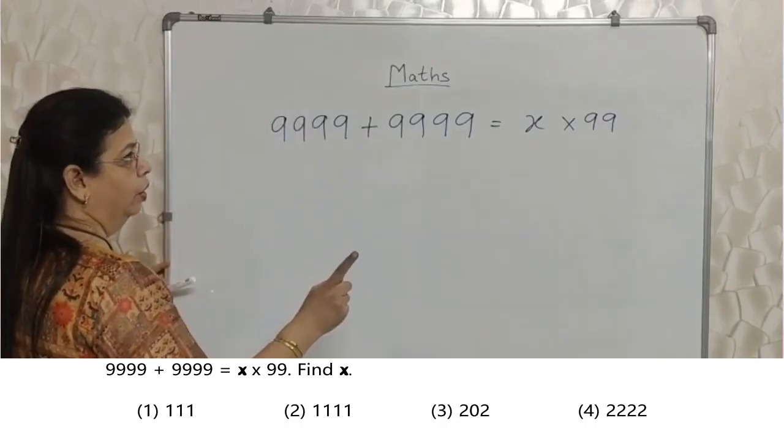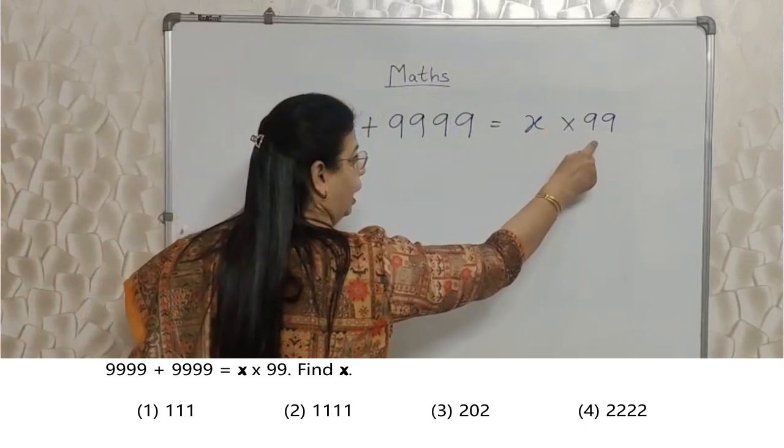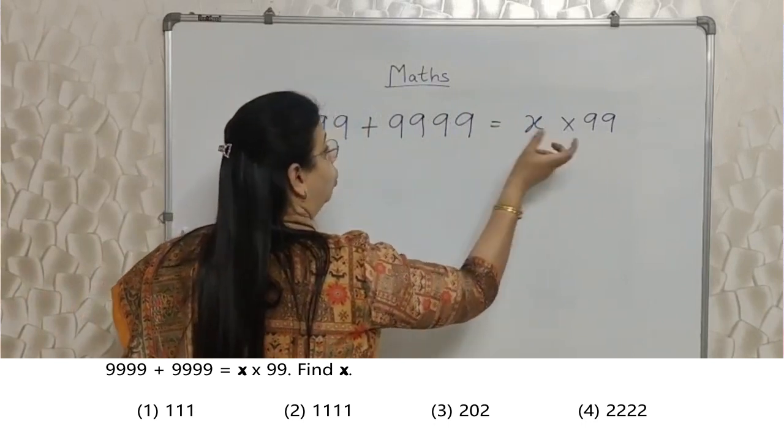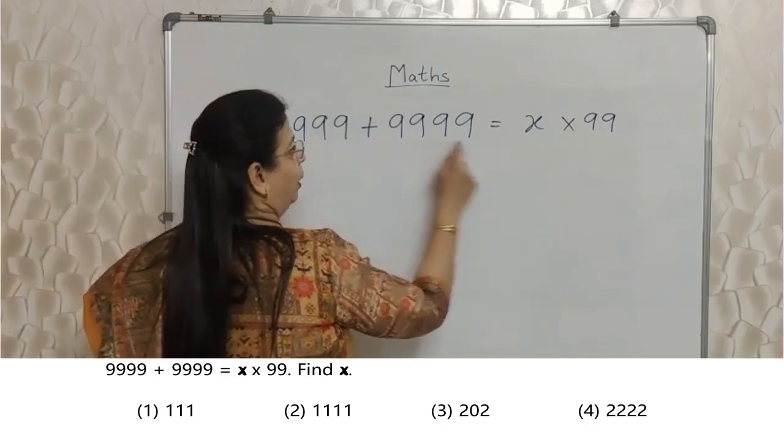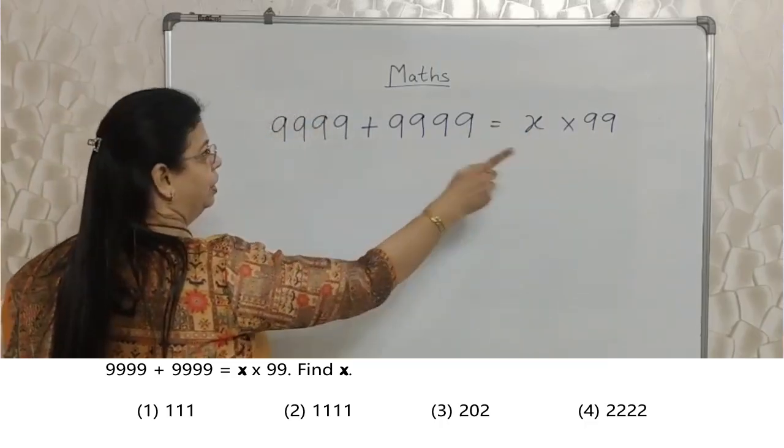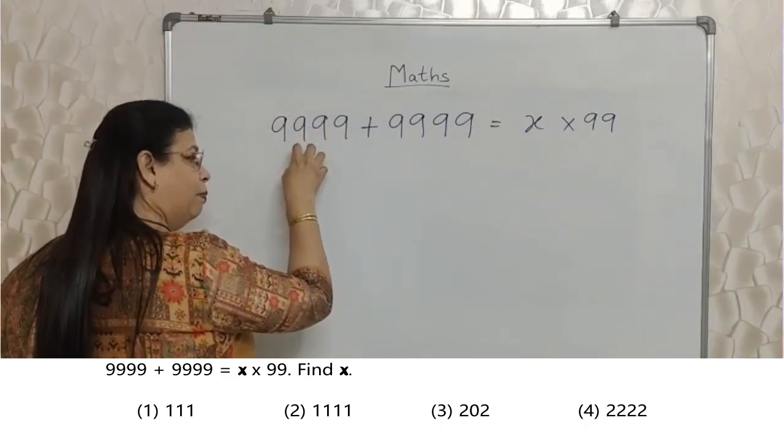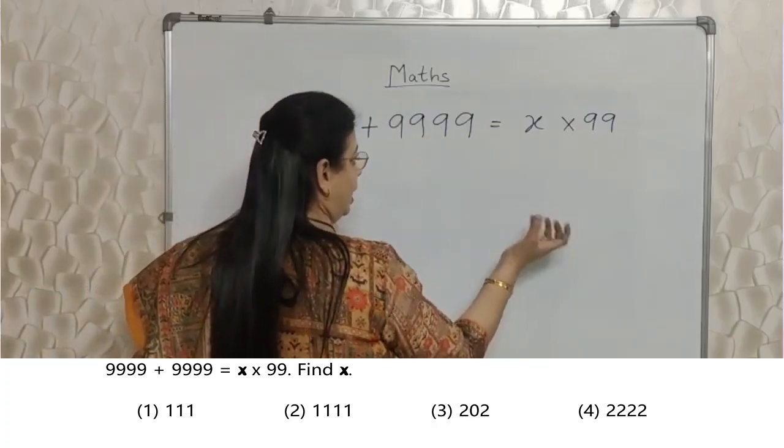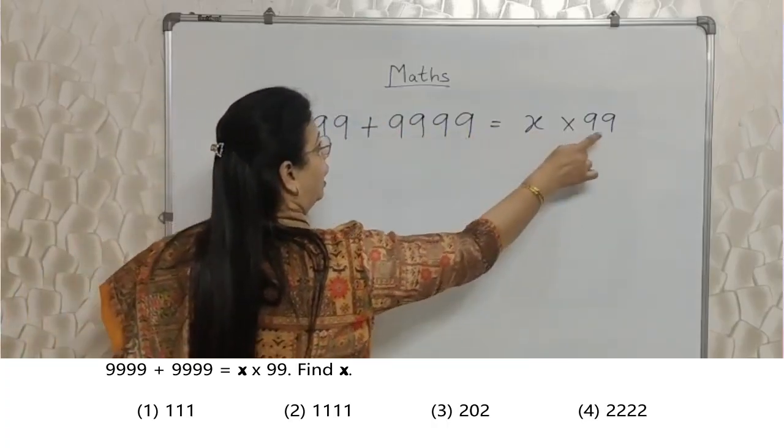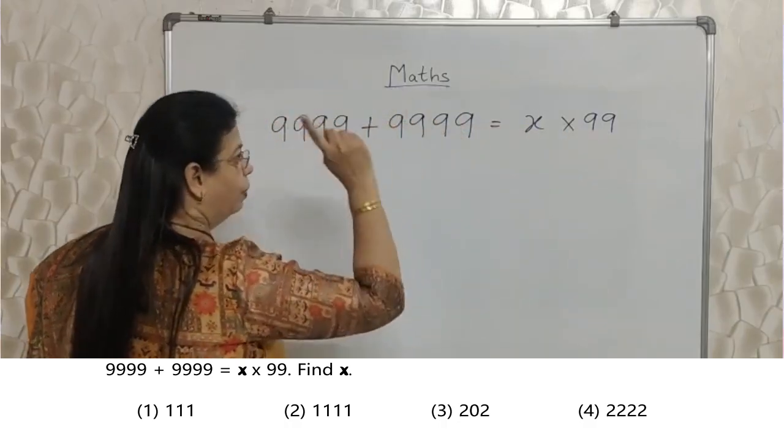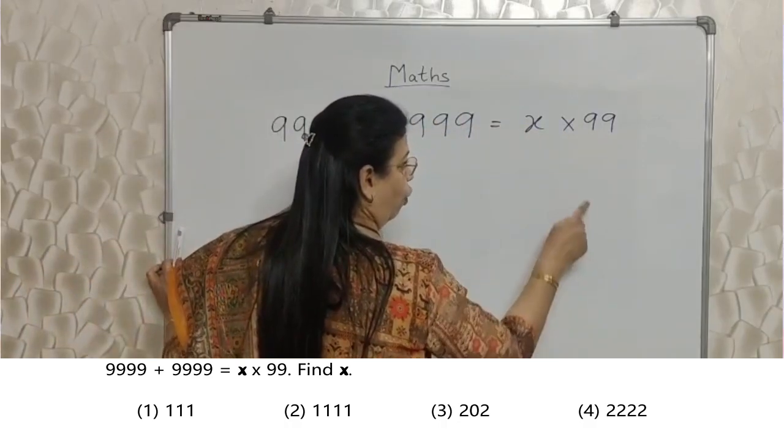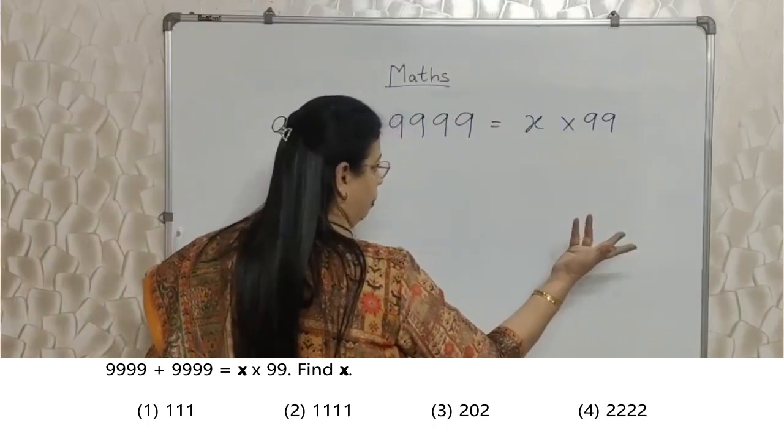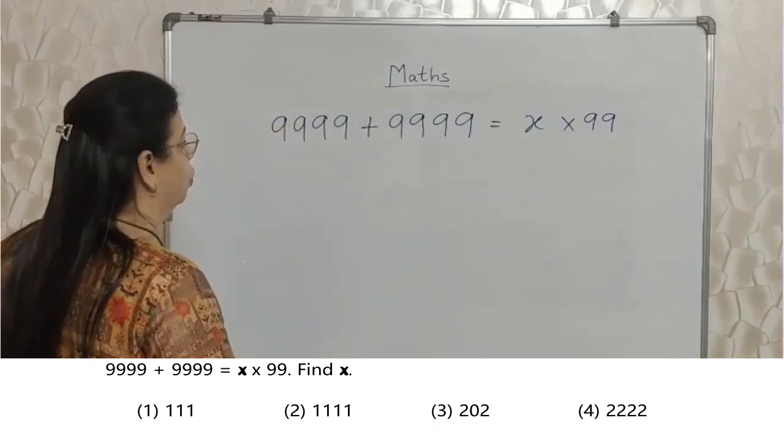9999 plus 9999 karke, usko 99 se divide karna wrong nahi hai. But it is time consuming. You will have to form the table of 99 to divide that number. But this is friendly number with 99. Isn't it? Sab same digits hai. So dividing this number will be definitely easy. So again, a smarter way.